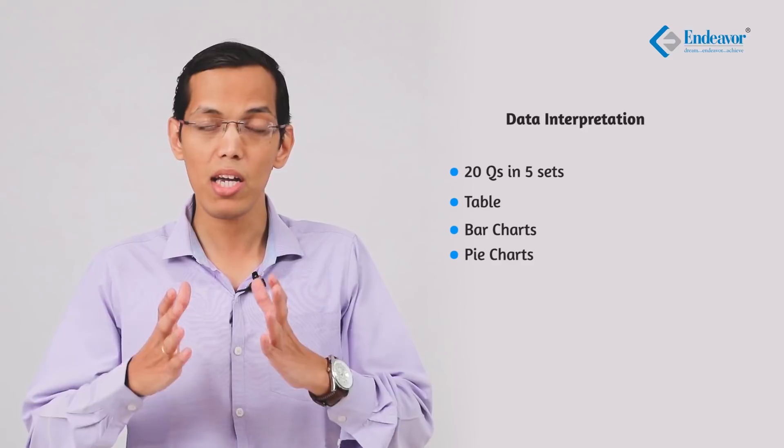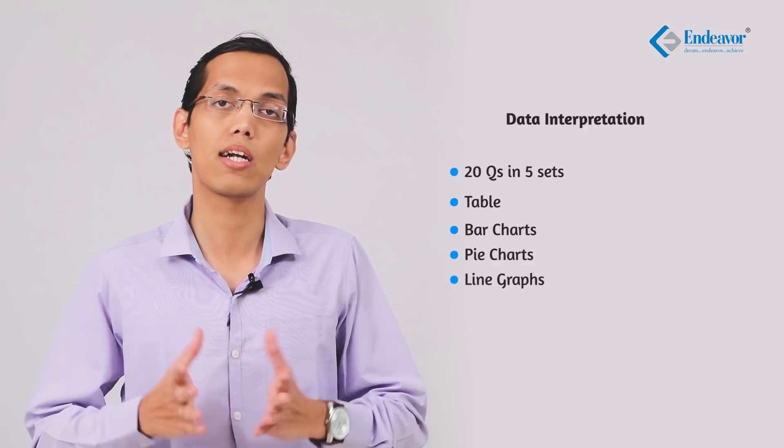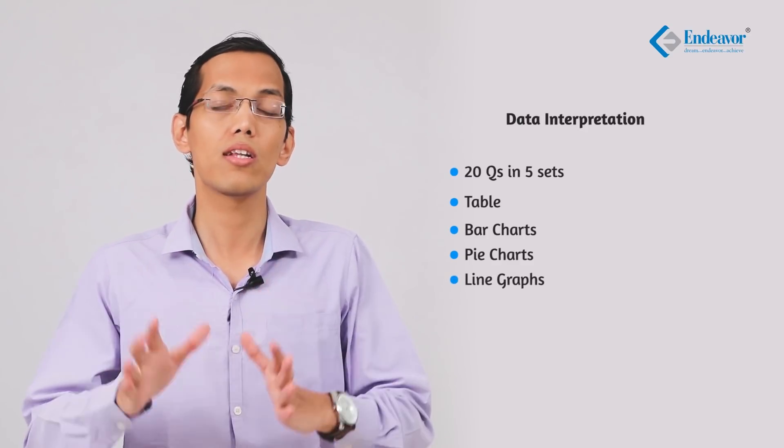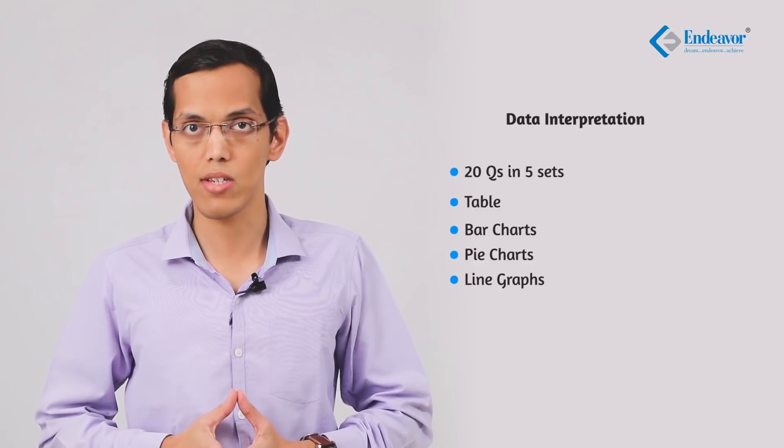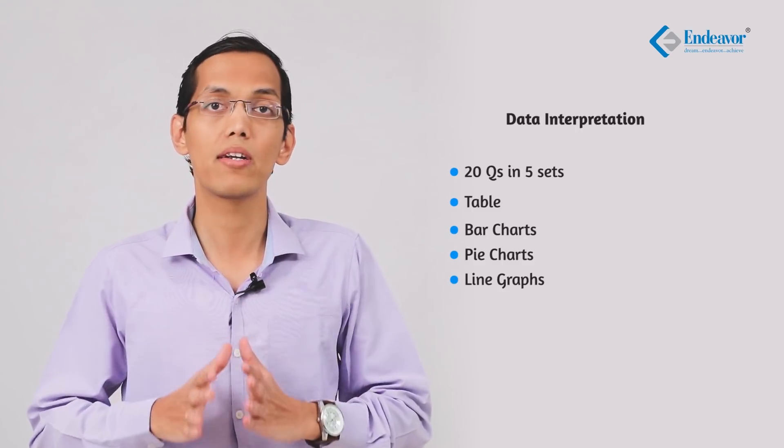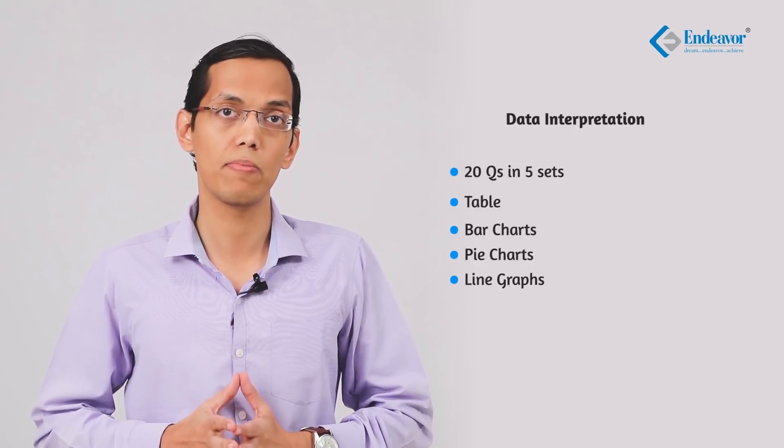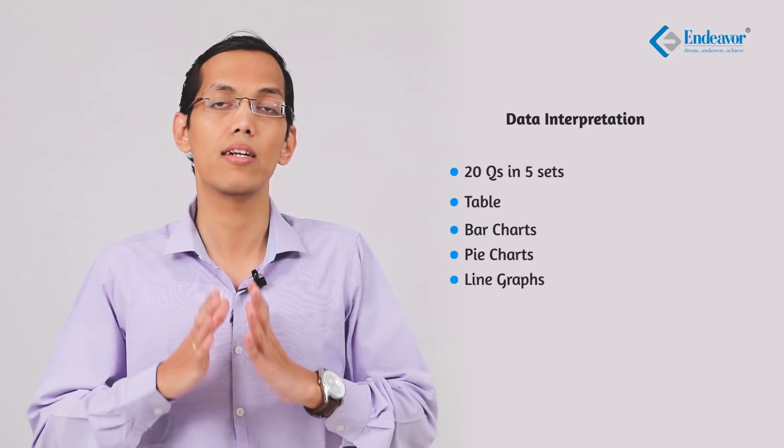Now coming to data interpretation part of this section. The section has 20 questions spread across five sets. Generally all these DI sets are from traditional DI. By traditional DI I mean table, bar charts, pie charts, line graphs etc. So there is nothing challenging as far as cracking the logic is concerned, although the format demands you to move at a very high speed and that is where exactly DI becomes challenging.